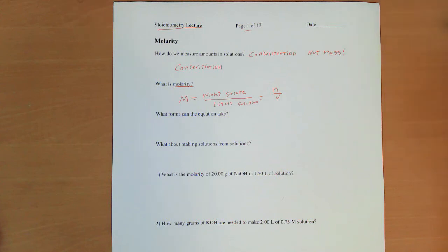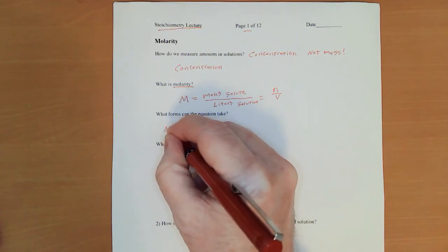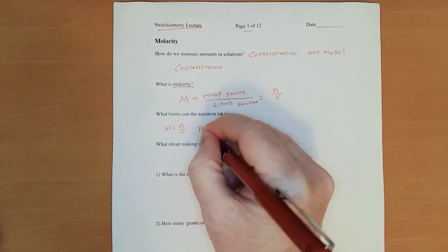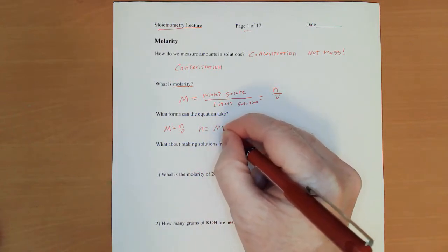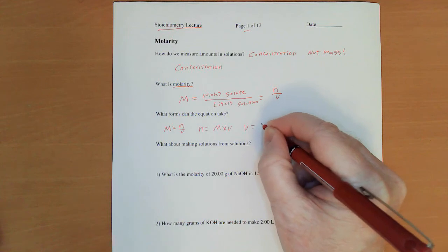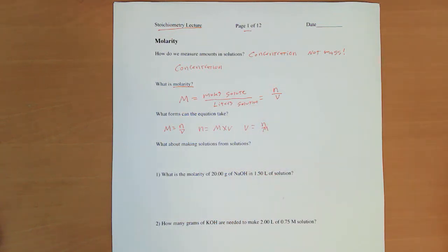So if capital M equals n over v, n can be capital M times v. Or v can equal n divided by capital M.